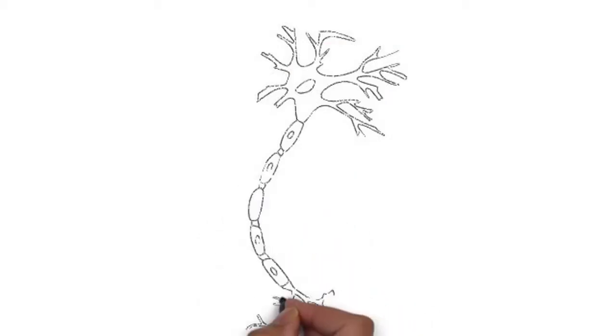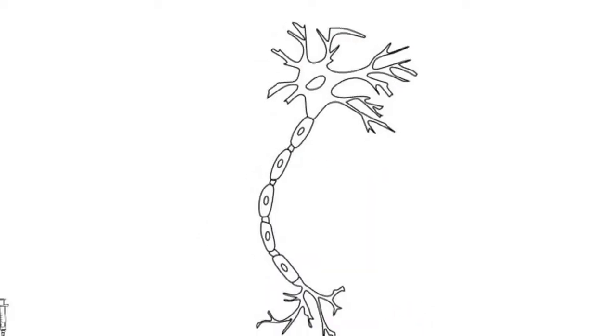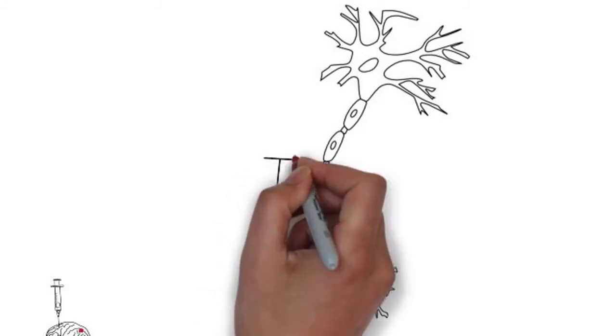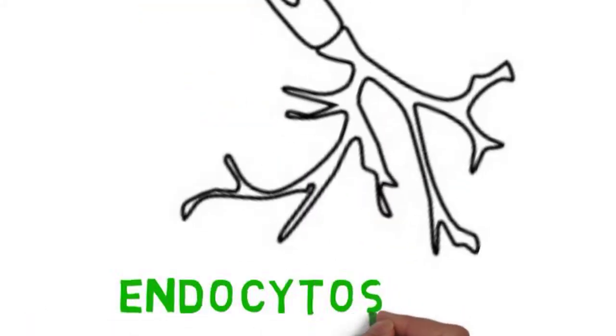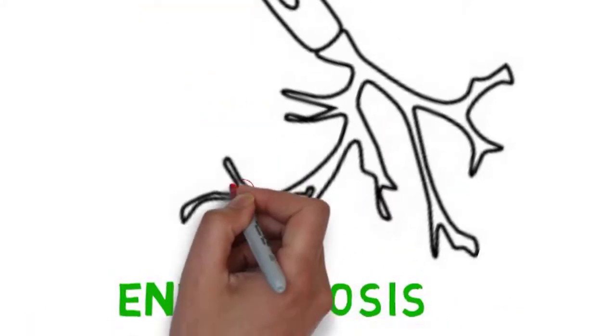When a tracer is injected, it is taken into the surrounding neurons. In the case of the retrograde tracer fluorogold, it crosses the cell membrane at the axon terminal by endocytosis, where it becomes trapped in lysosomes by a pH gradient. This is known as acid trapping.